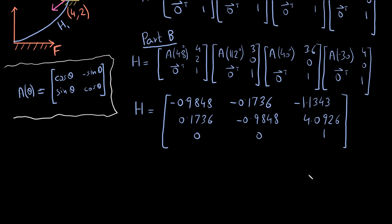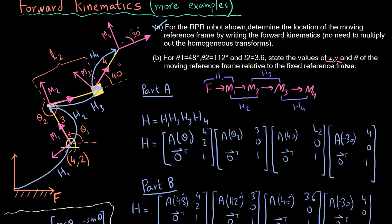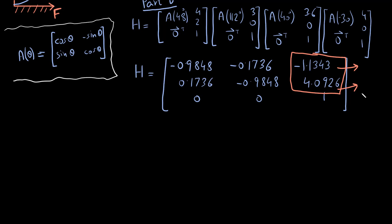The resulting homogeneous transform H takes the fixed frame directly to the final moving frame M4. From this matrix, the top-right two values are the x and y coordinates of the final moving frame. So x = −1.1343 and y = 4.0926.